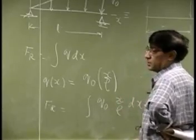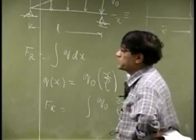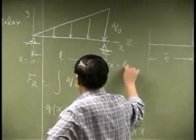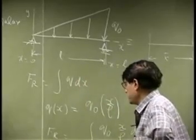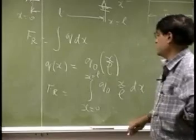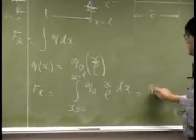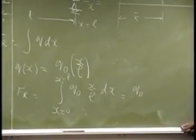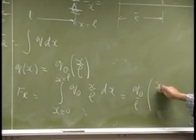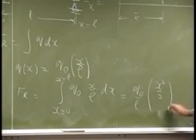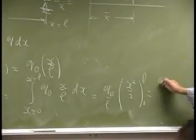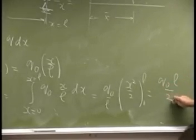The resultant would be an integration of Q0*x/L dx. We need the limits from 0 to L, so we are looking at x = 0 and x = L. That will be Q0/L times x²/2 going from 0 to L, and that will be Q0*L/2.